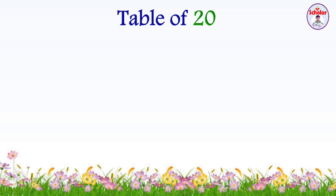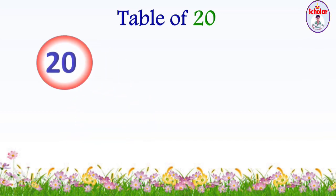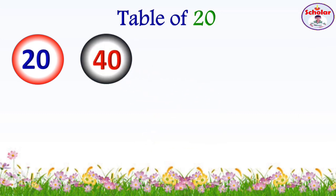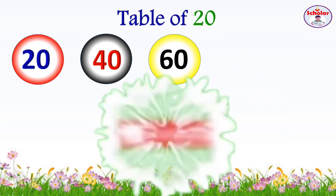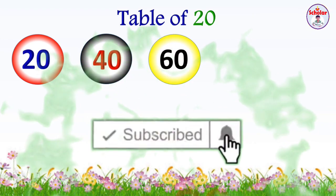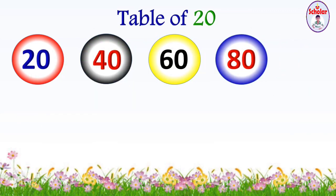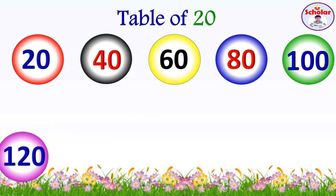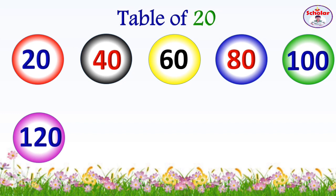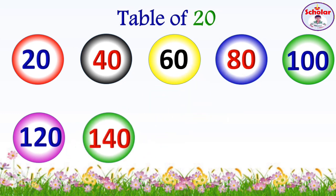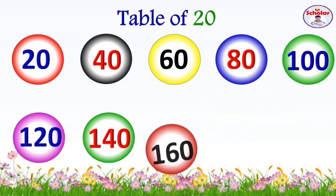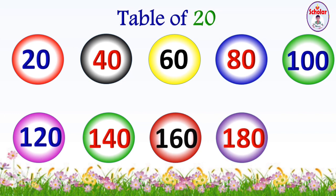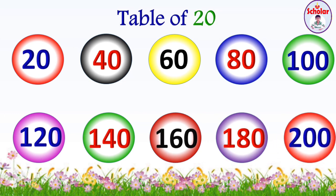Table of 20: 20×1=20, 20×2=40, 20×3=60, 20×4=80, 20×5=100, 20×6=120, 20×7=140, 20×8=160, 20×9=180, 20×10=200.